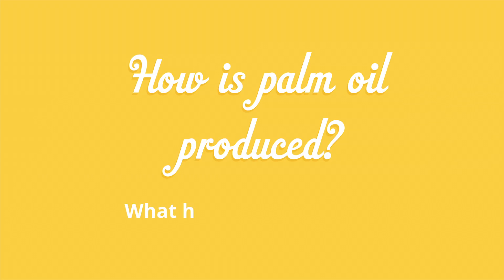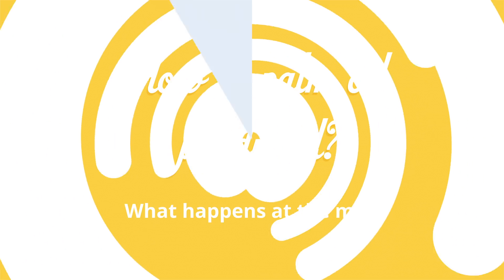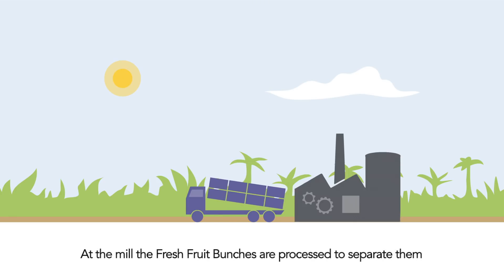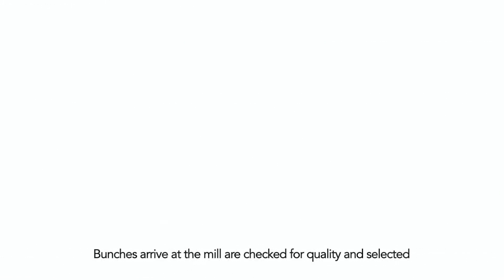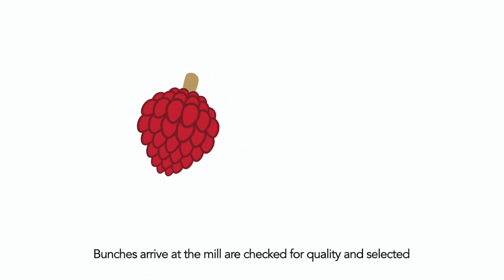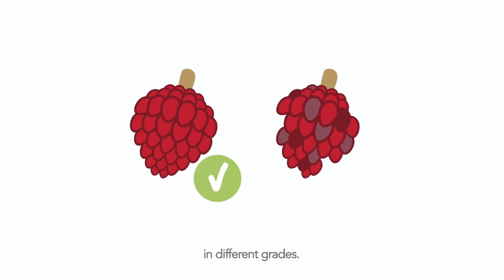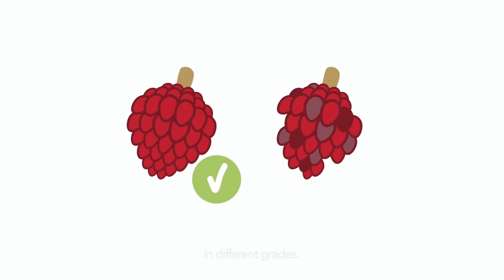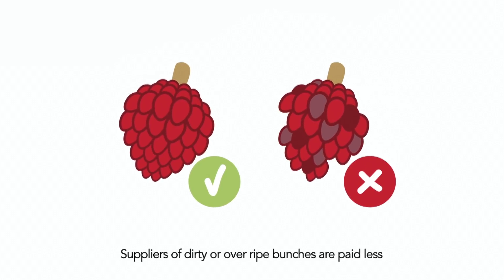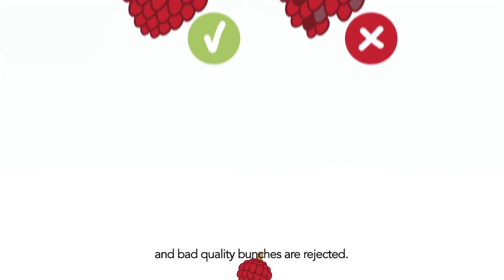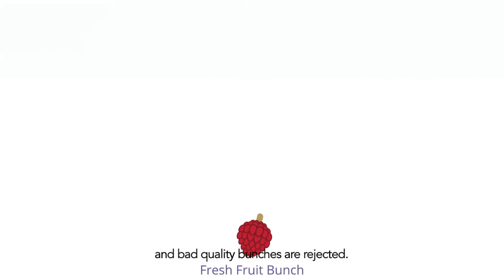How is palm oil produced? At the mill, the fresh fruit bunches are processed to separate them into functional components. Bunches arriving at the mill are checked for quality and selected in different grades. Supplies of dirty or overripe bunches are paid less, and bad quality bunches are rejected.